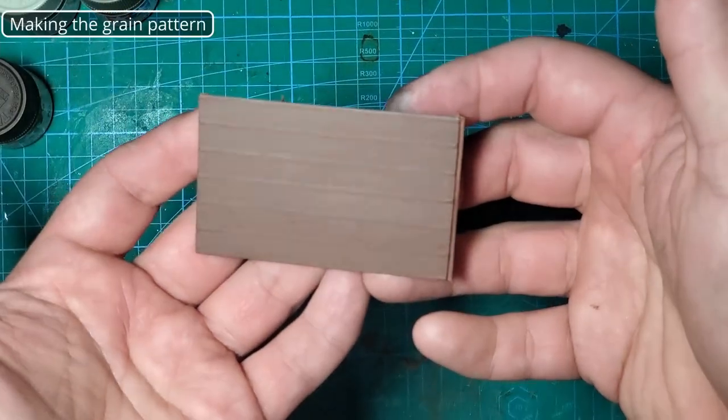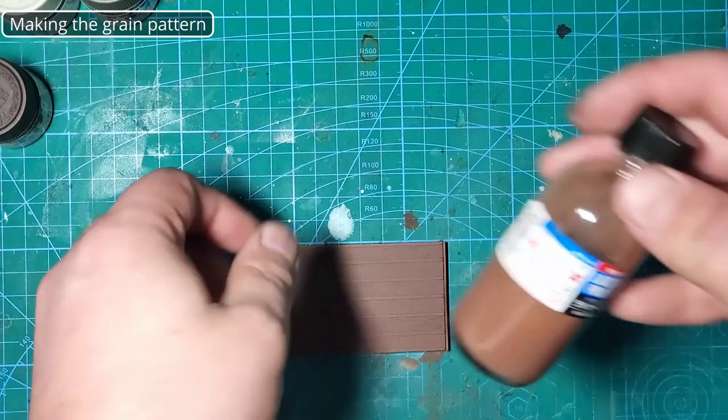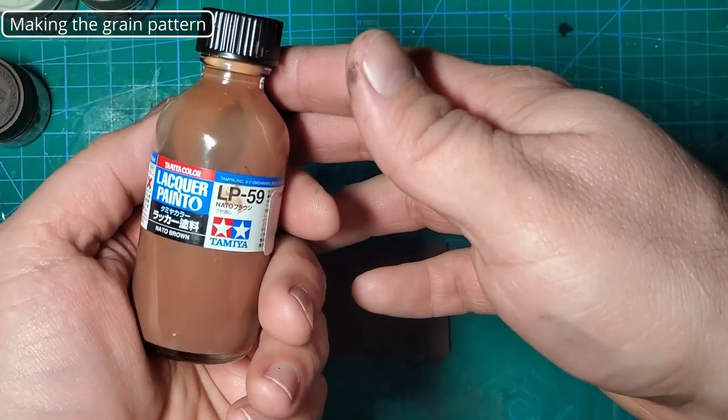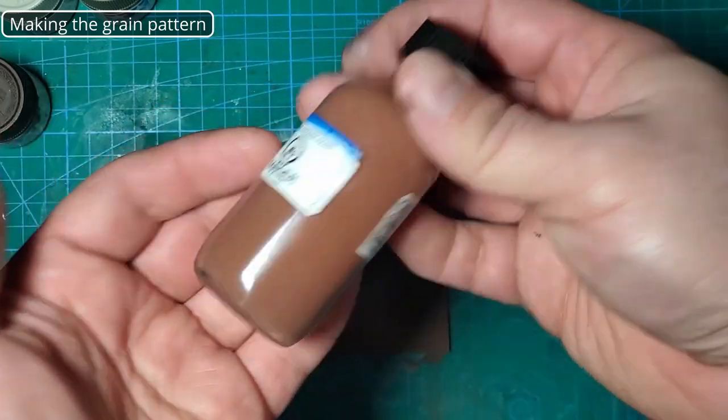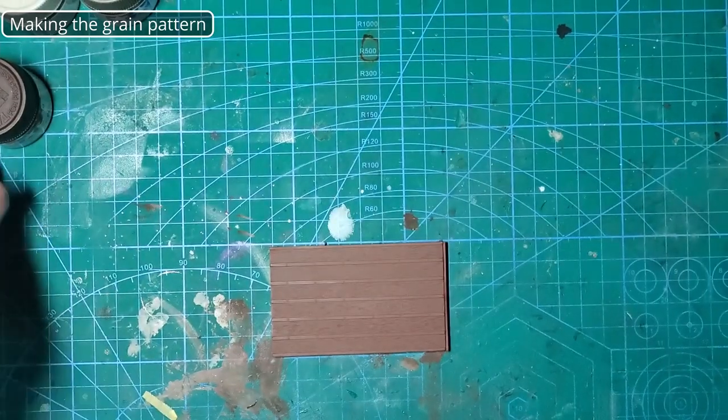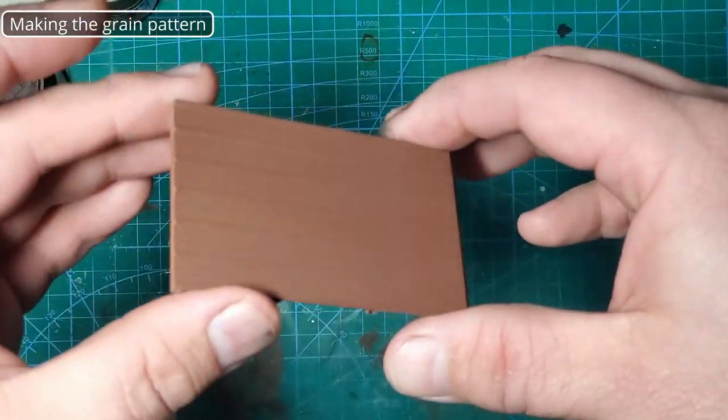So here's our bed. We primered it with some Stynylrez gray and then we base coated it with some Tamiya LP-59 NATO brown. Looks like chocolate milk, and that's gotten us to this point here.